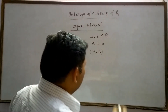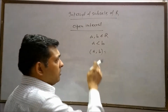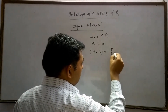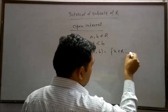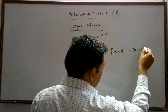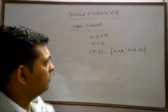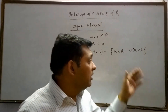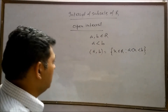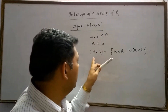In set-builder form, this interval can be written as: the set of x belonging to real numbers such that x is greater than a but less than b. This is the set-builder form of the set which contains all real numbers between a and b, and this is a form of interval. Generally, we use the interval form to represent such sets of real numbers.